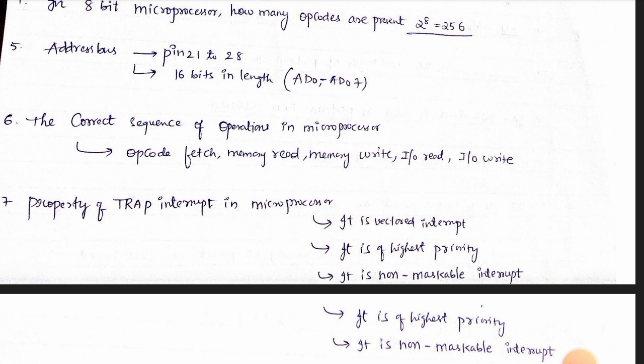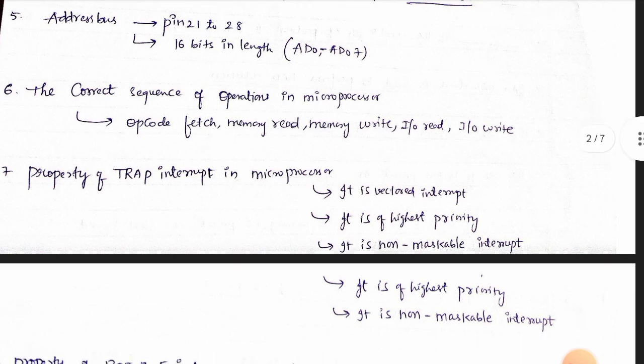Address Latch Enable is an important concept. The correct sequence of operations for a processor is: memory read, memory write, input read, and input write.